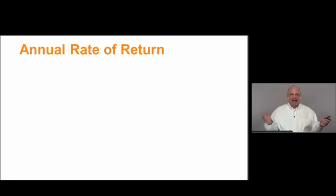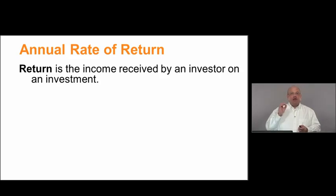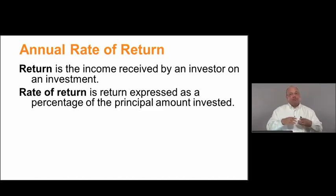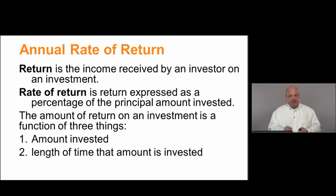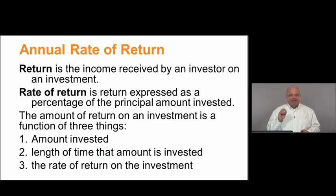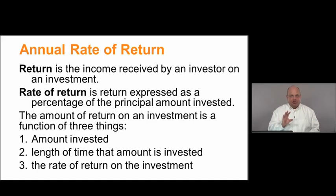We start by looking at the annual rate of return. The return is the income received by an investor on an investment — how much money you make. The rate of return is simply a percentage: the percentage of the principal amount that was invested. The amount of return we get on an investment is a function of three things: how much was invested, the length of time it was invested for, and the rate of return on that investment. Different investments will have different amounts, different rates of return, and different time periods.